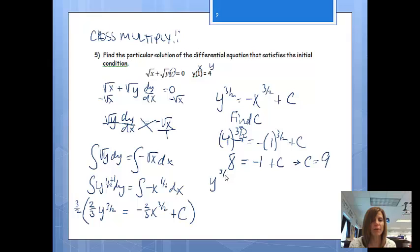So if I rewrite my formula, I'll have y to the 3 halves is equal to negative x to the 3 halves plus 9. And then finishing solving for y to get rid of the 3 halves power, we'll raise both sides to the 2 thirds power, just do the reciprocal power. So y will equal negative x to the 3 halves plus 9 raised to the 2 thirds power. And that would be my answer.